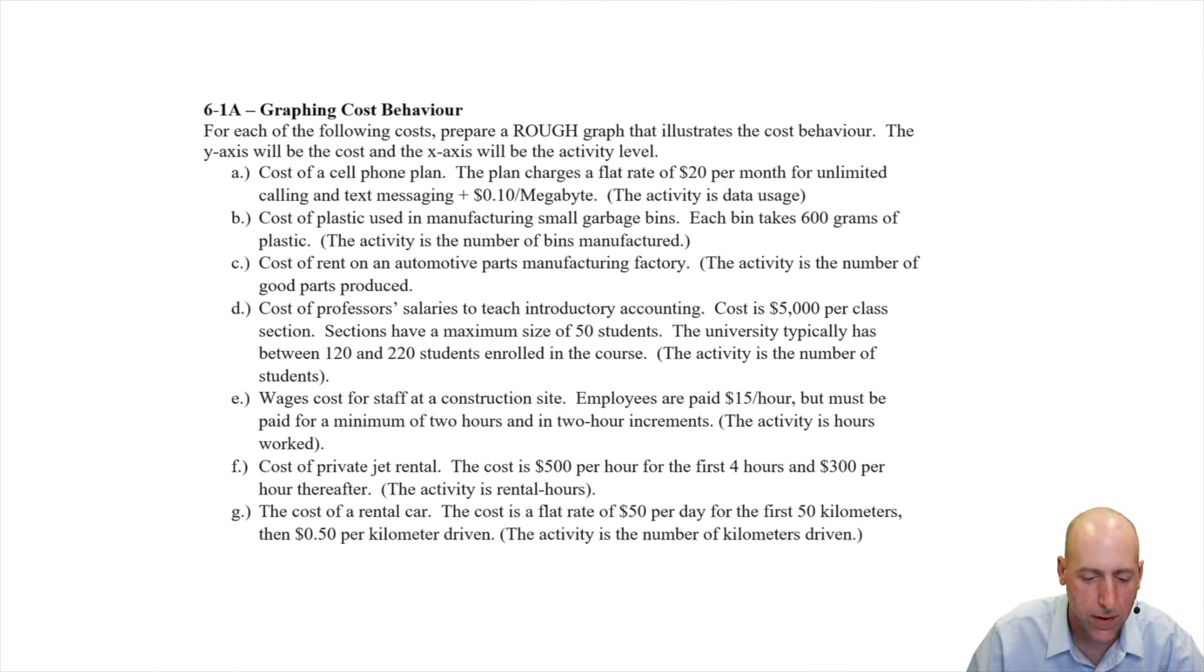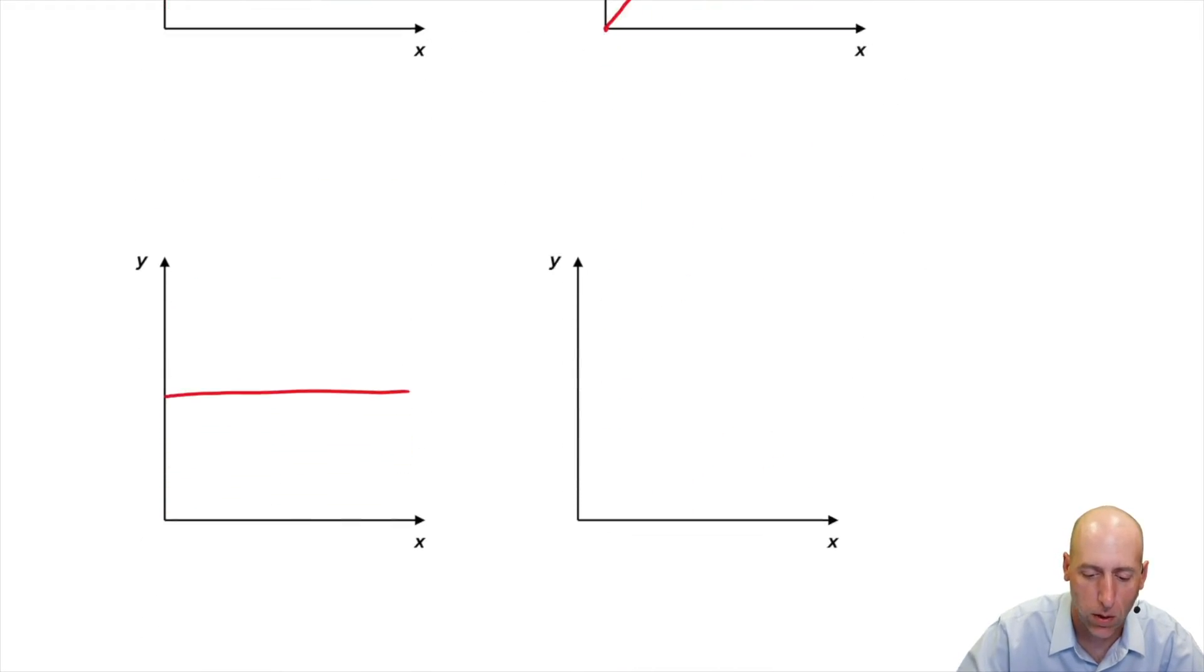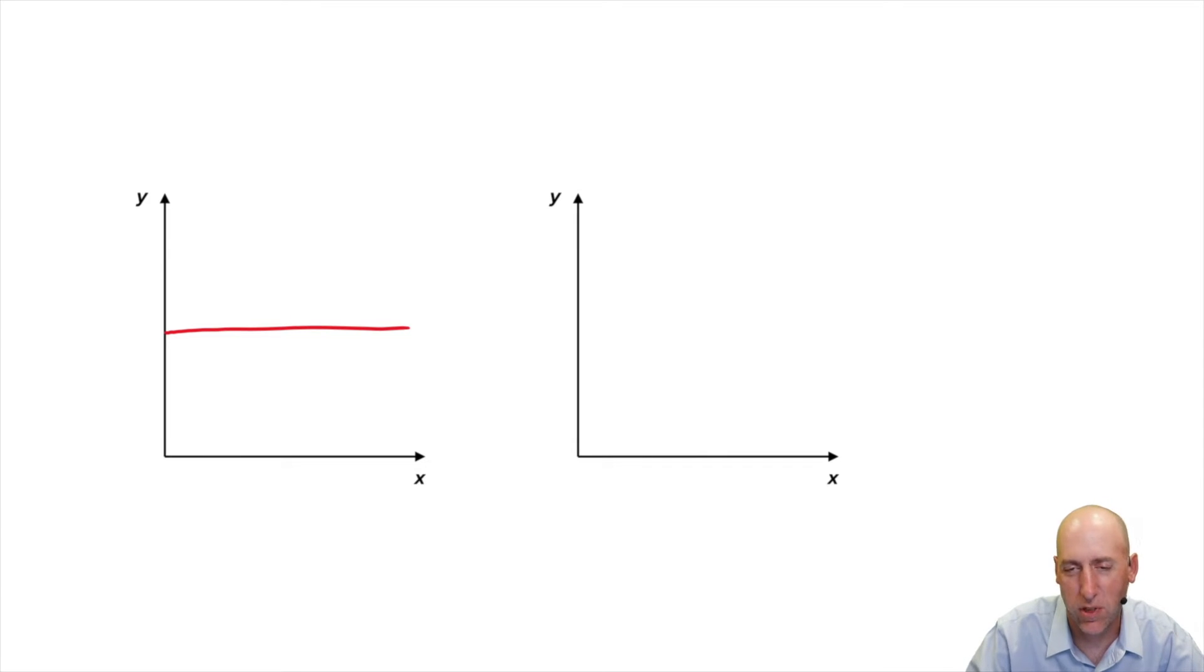D, cost of professor's salaries to teach introductory accounting. Cost is $5,000 per section. Sections have a maximum size of 50 students. The university typically has between 120 and 220 students enrolled in the course. So from basically one to 50 students, it's going to cost us $5,000.